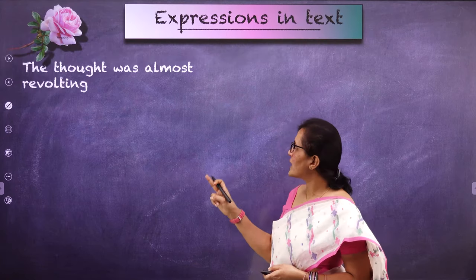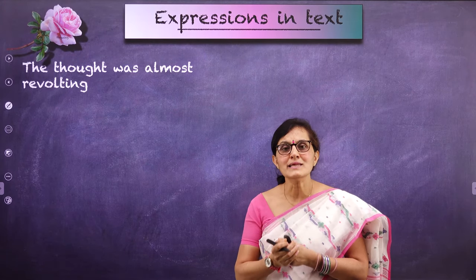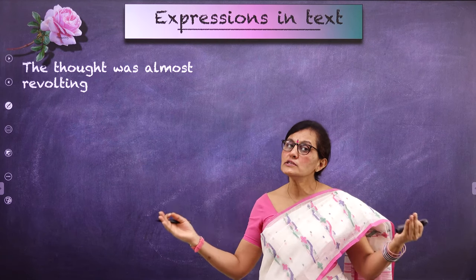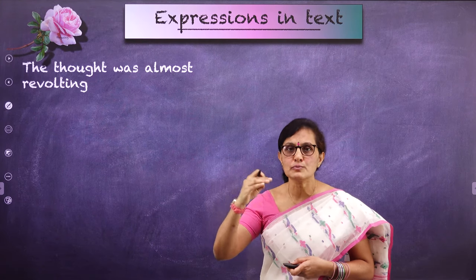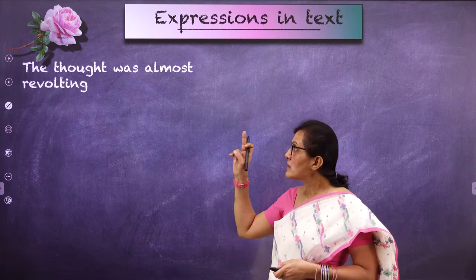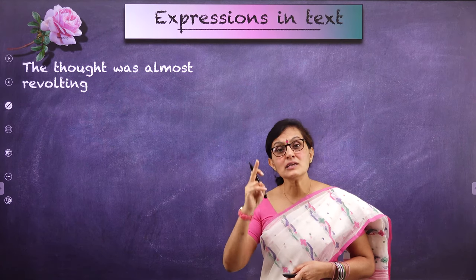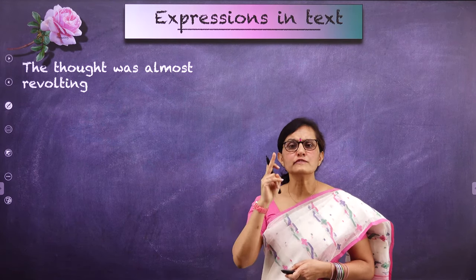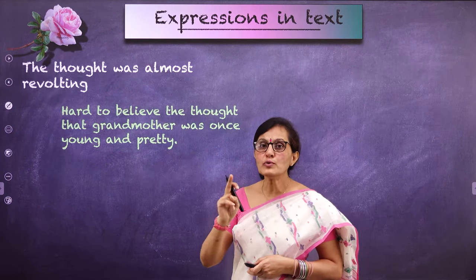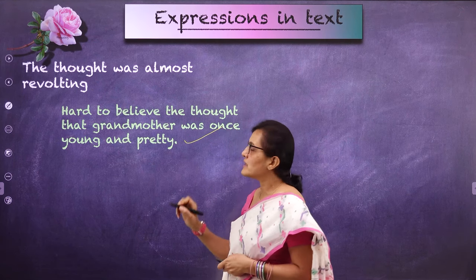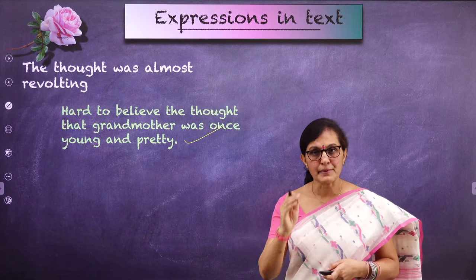Let's look at a few words and expressions from the textbook. The first one: 'The thought was almost revolting.' Revolting means something which is hard to believe. Here, the thought that the author's grandmother was actually young and pretty was very difficult for the author to believe — so the thought was almost revolting.